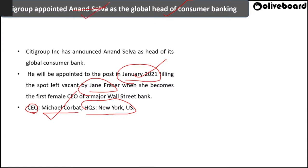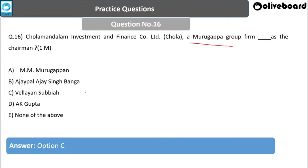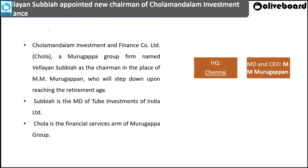Next question: Chola Mandalam Investment and Finance Company — a Murugappa Group firm — recently appointed whom as Chairman? Options: M.M. Murugappan, Ajay Singh Banga, Balasubramanian, A.K. Gupta, or N. Ramesh. The answer is Vellayan Subbiah. Vellayan Subbiah has recently become the Chairman of Chola Mandalam Investment and Finance Company, replacing M.M. Murugappan who is retiring. The headquarters of Chola Mandalam Finance is in Chennai, and its MD and CEO is M. Murugappan.